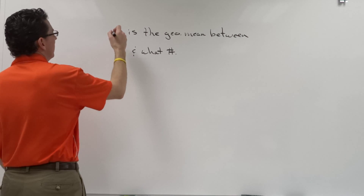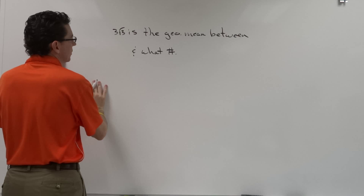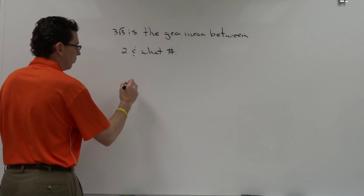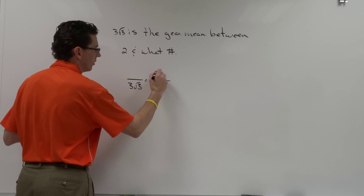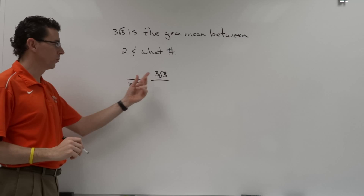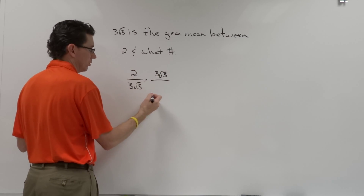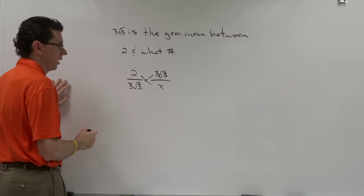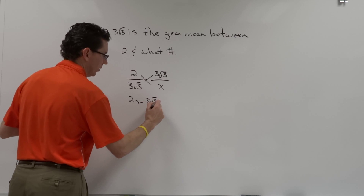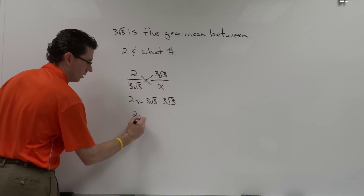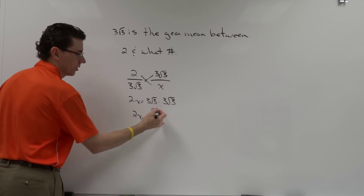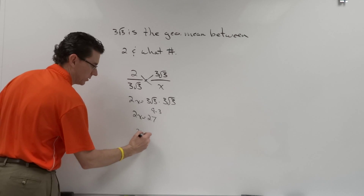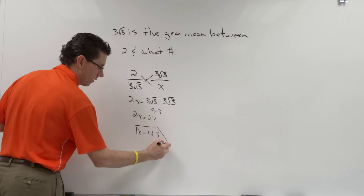Let's do one more: 3 root 3 is the geometric mean between 2 and what number? Set up the proportion with 3 root 3 as the geometric mean in both the denominator of the first ratio and the numerator of the second, with 2 and x as the extremes. Nothing reduces here, so we cross multiply: 2x equals 3 root 3 times 3 root 3. That gives us 3 times 3 equals 9, and root 3 times root 3 equals square root of 9 which is 3, so 9 times 3 is 27. Divide both sides by 2 and we get 13.5.